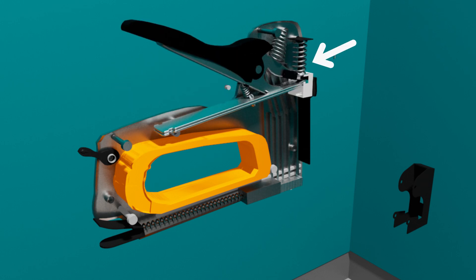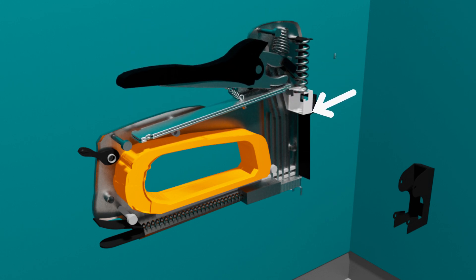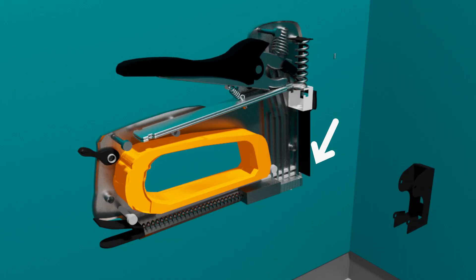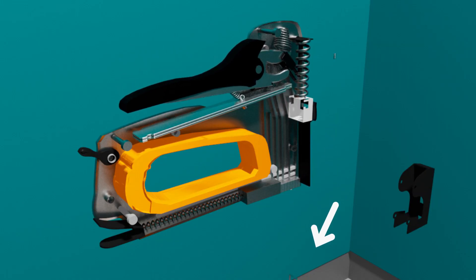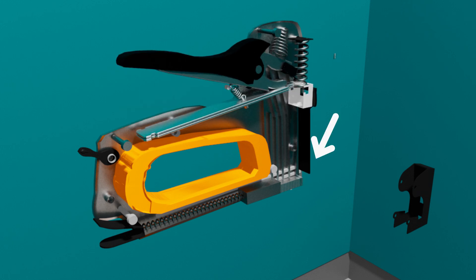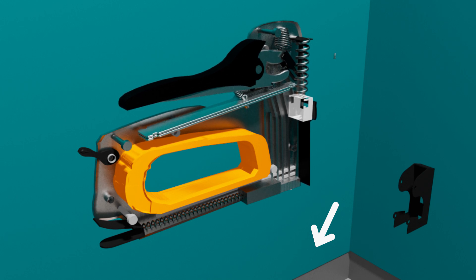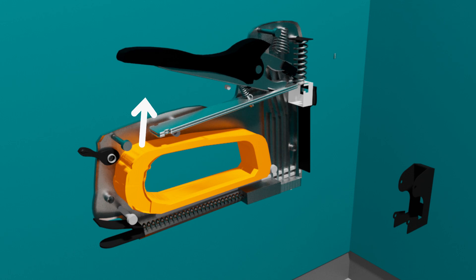Then the compressed spring returns to its original shape, pushing the spacer forward. The spacer and piston hit the pin, driving it forward into the wood with high power when the handle is released.